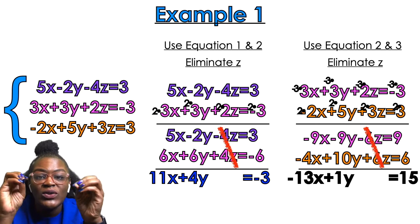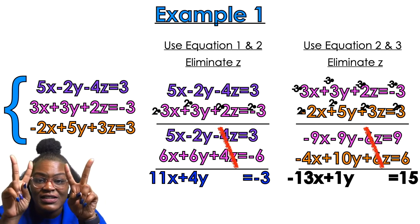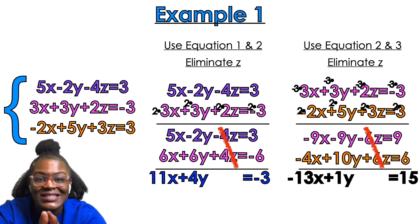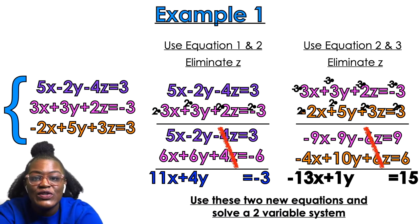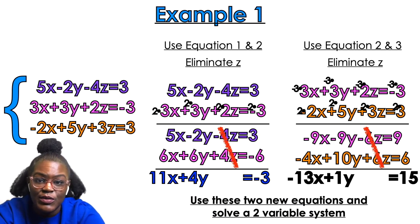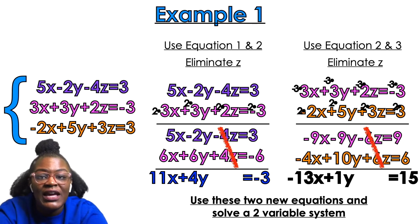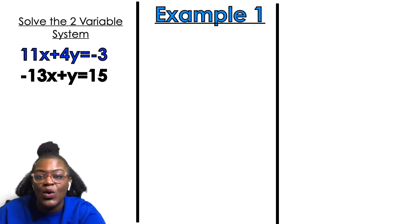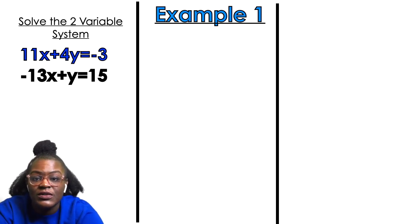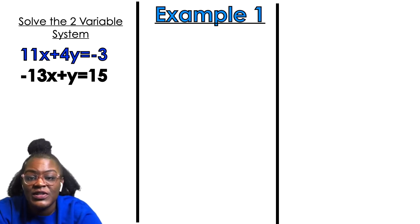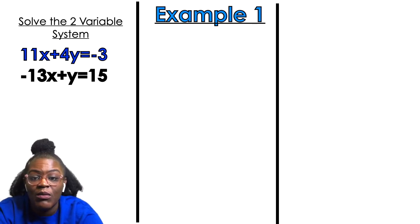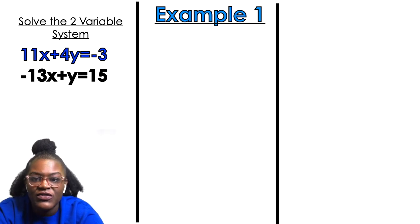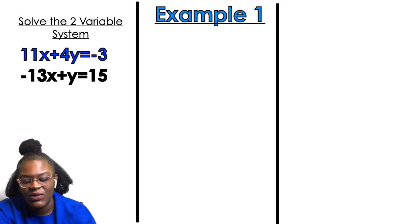Now we're going to use these two new equations to solve a two-variable system, which we already know how to do. Looking at the blue and the black equations, I think I'm going to eliminate y, because there's no coefficient in front of the y in the black equation. So all I have to do is multiply the black equation by negative 4 to make the 4y in the blue equation cancel.